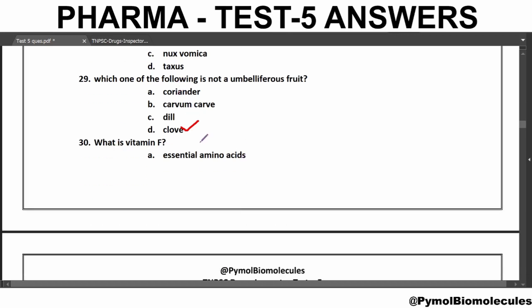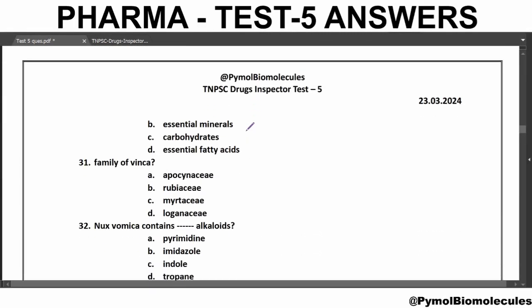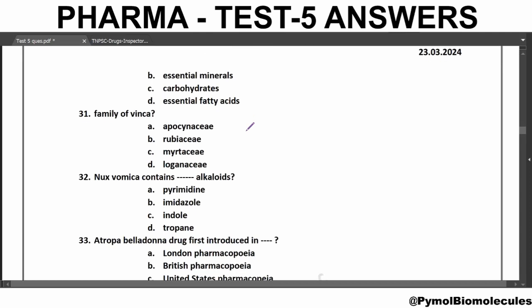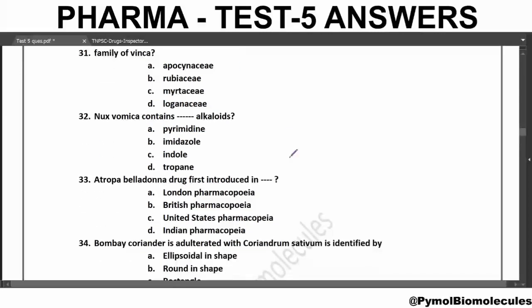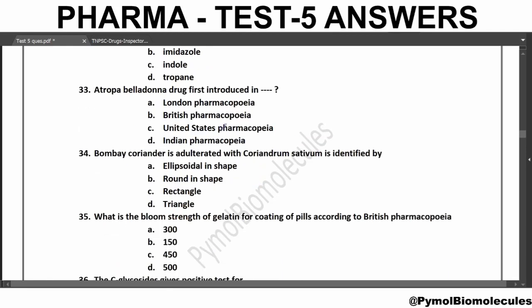What is Vitamin F? The answer is Essential Amino Acid, and it is present in Spirulina. Family of Vinca: the answer is Apocynaceae. Nux vomica contains Indole alkaloids — Strychnine and Brucine. Atropa belladonna was first introduced in which pharmacopoeia? It was first introduced in the London Pharmacopoeia, in the year 1809.